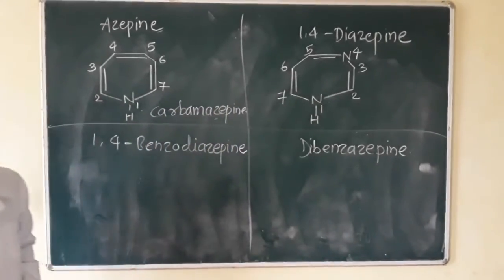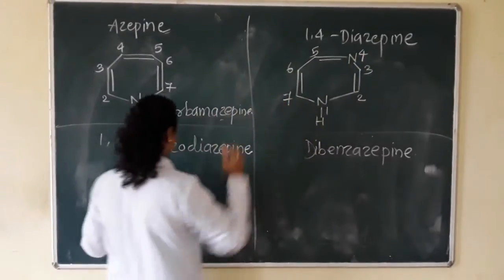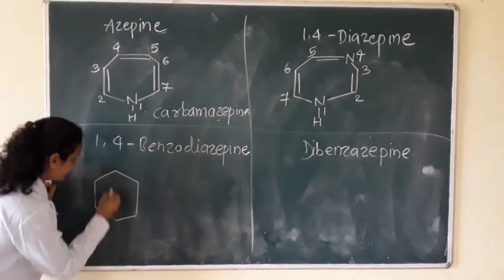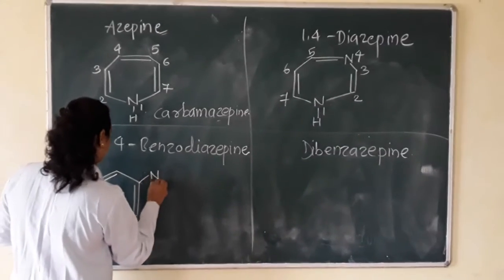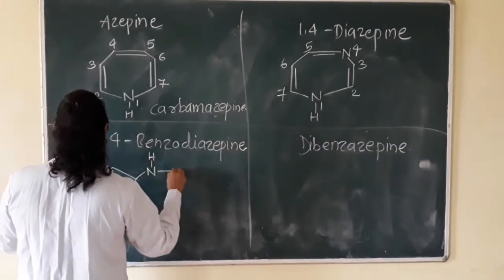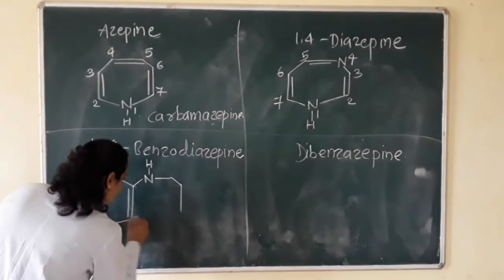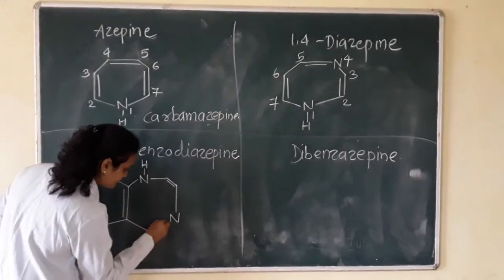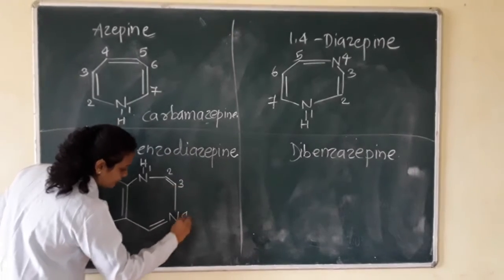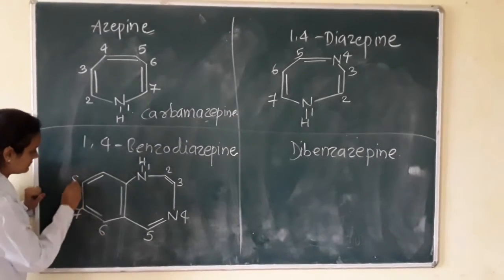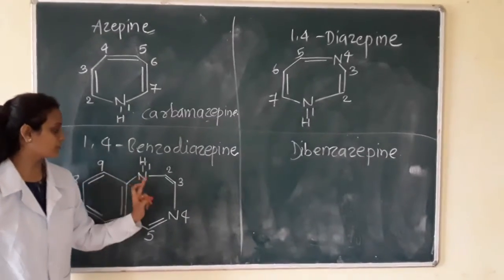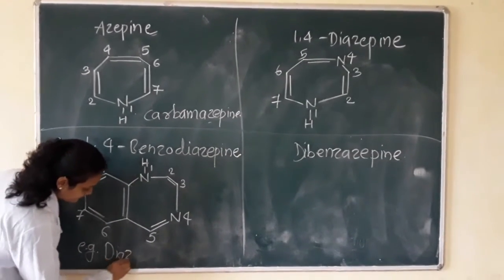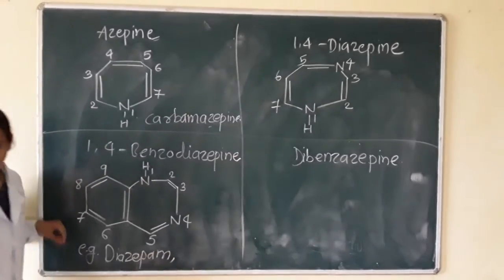Next one: pada. 1, 2, 3, 4, 5, 6, 7. And the next one for benzodiazepine. The ring contains positions 1, 2, 3, 4, 5, 6, 7, 8, 9. Nitrogen at the 1st and 4th positions. Example: diazepam and lorazepam.